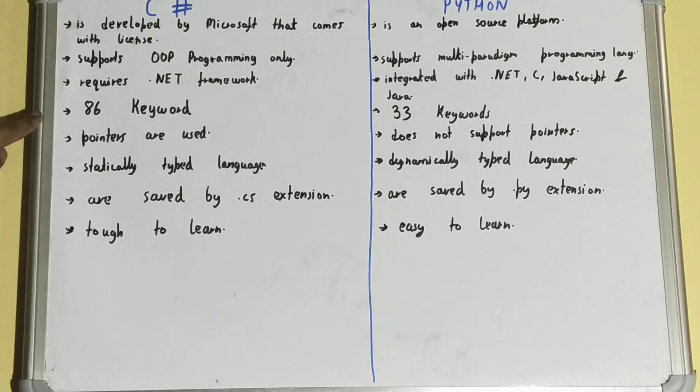C# has 86 keywords whereas Python has 33 keywords. Pointers are used in C# but only in unsafe mode, whereas Python does not support pointers at all.